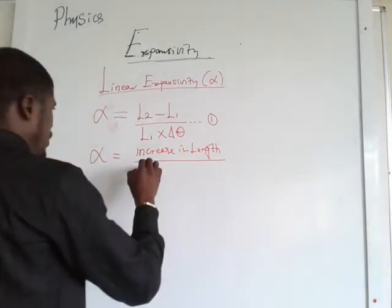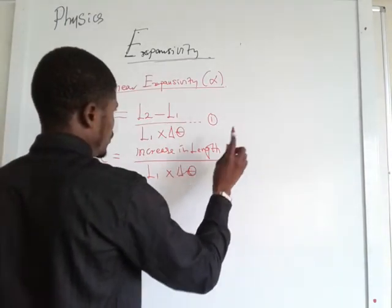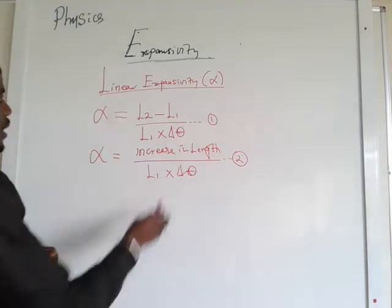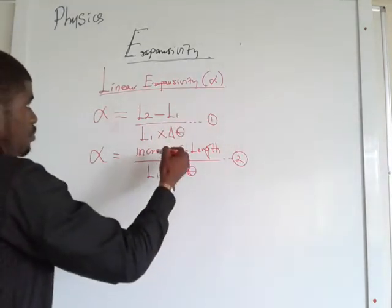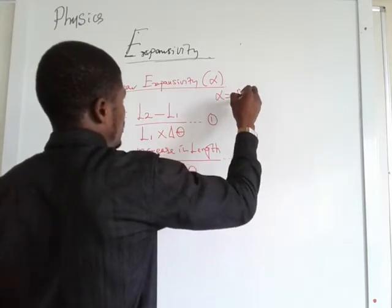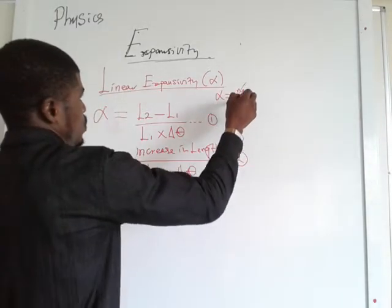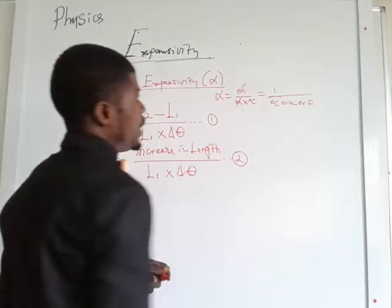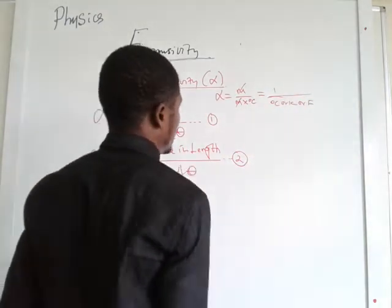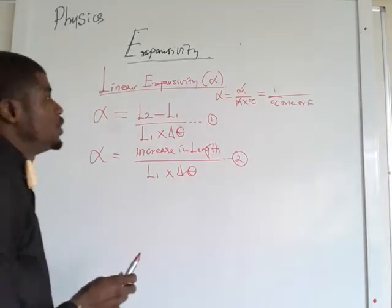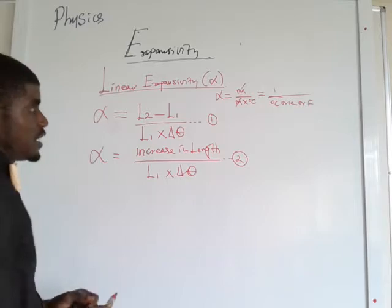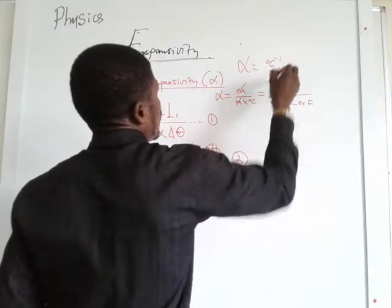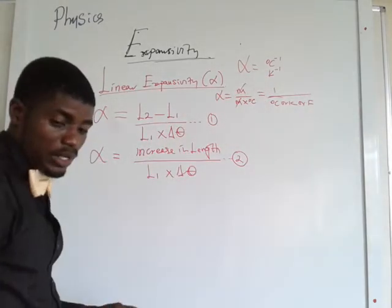From the board you will agree that metres appear in both the numerator and denominator, so they cancel out. You have alpha equals metres over metres times degrees Celsius. Metres cancel out metres and so you are left with 1 over degrees Celsius, or per Kelvin. In Nigeria we make use of degrees Celsius or Kelvin. This is the SI unit for alpha, linear expansivity.